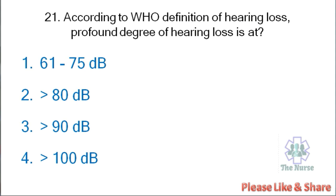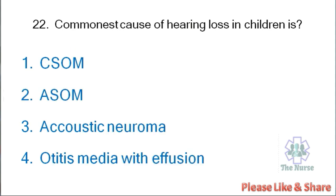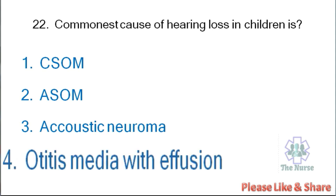Next question: According to WHO definition of hearing loss, profound degree of hearing loss is — 61 to 75 decibel, more than 80 decibel, more than 90 decibel, or more than 100 decibel? Correct answer is more than 80 decibel. Next question: Commonest cause of hearing loss in children is — chronic suppurative otitis media, acute suppurative otitis media, acoustic neuroma, or otitis media with effusion? Correct answer is otitis media with effusion.